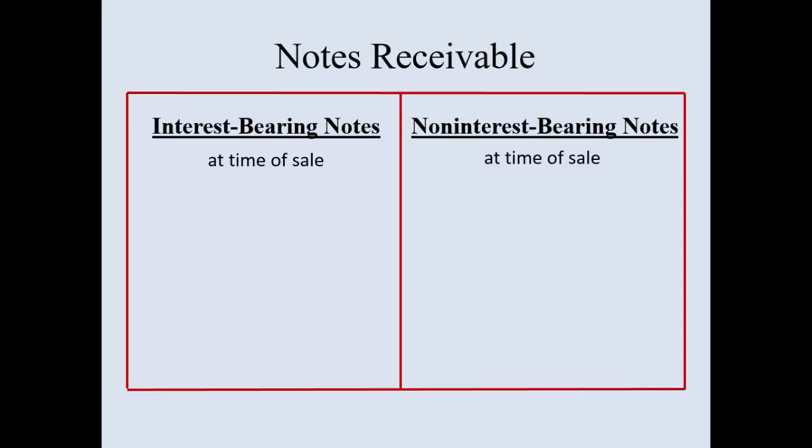At the time of the sale, what is your journal entry? With an interest-bearing note it's very easy: debit Notes Receivable $70,000, credit Sales Revenue $70,000. Below that is a calculation of what the total interest will be at maturity.